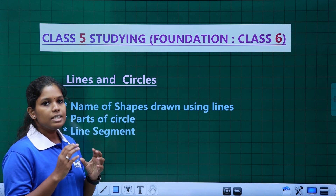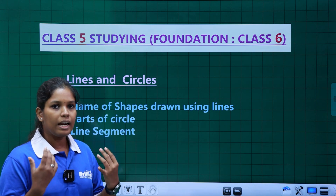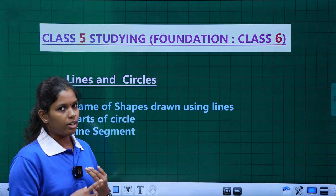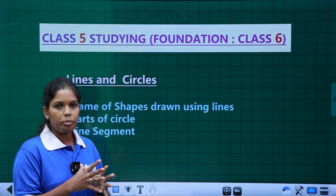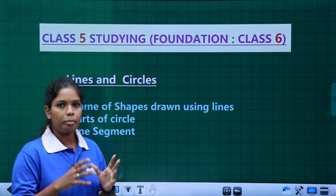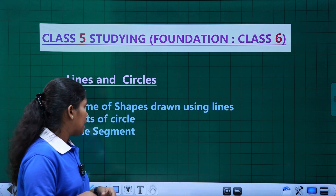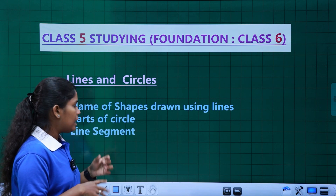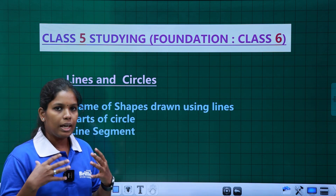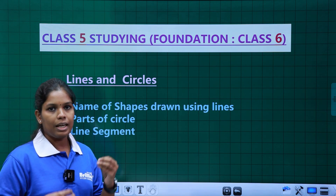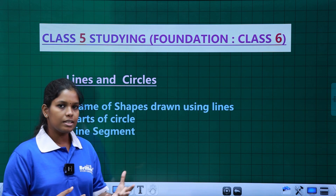Parts of a circle — there are some parts of the circle: radius, center, diameter. You will be able to study the properties. Then, line segment — if you are going to study a line segment, you will be able to study the points.